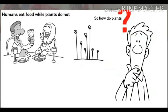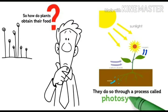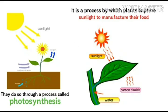Plants need sunlight, carbon dioxide, and water. They do so through the process called photosynthesis. It is a process by which plants capture sunlight to manufacture their food, taking carbon dioxide from air.